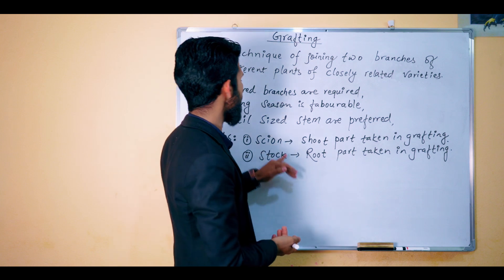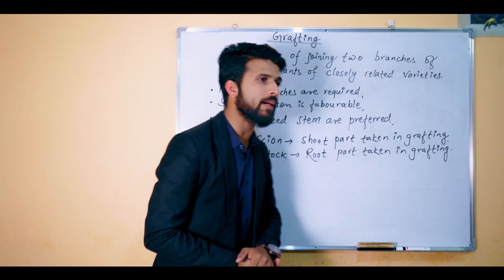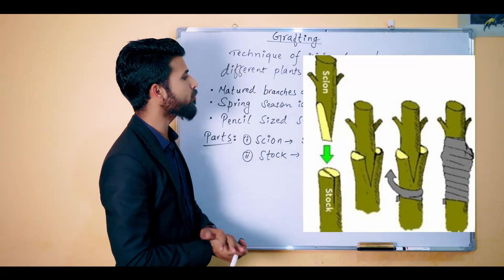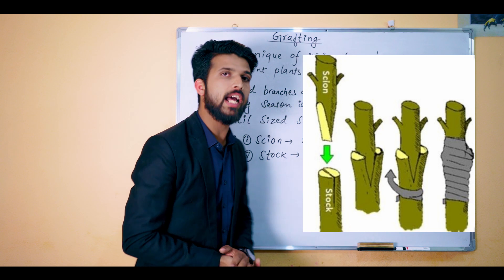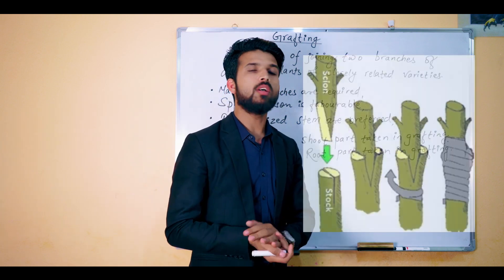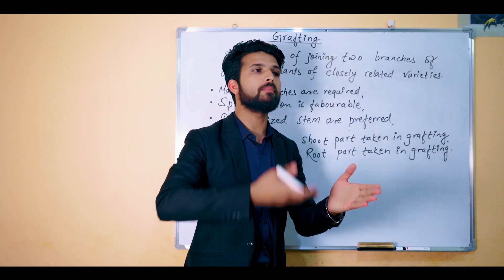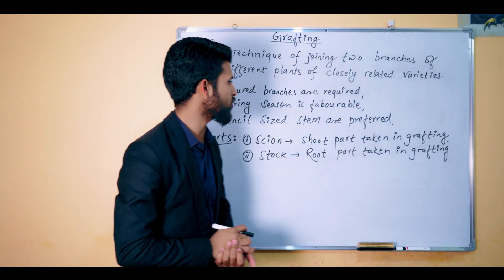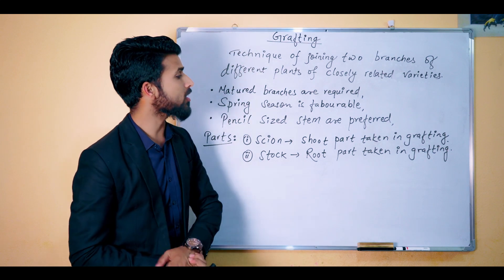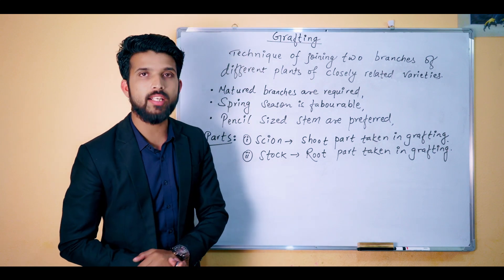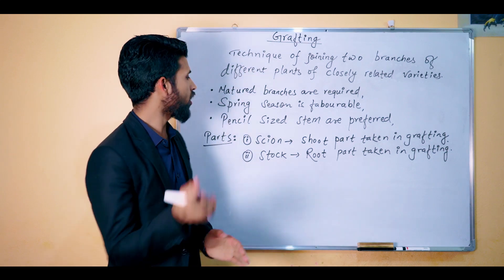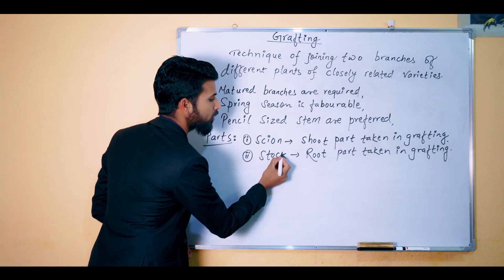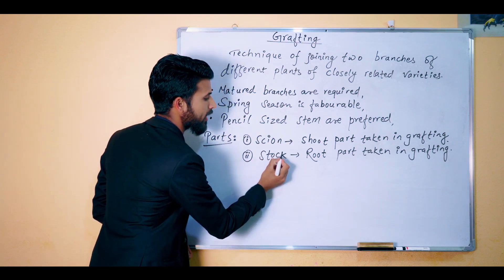The first part is the scion, or the top part. The scion is the top part taken in grafting. The stock is the root part taken in grafting. Remember: scion is the top and stock contains the root.